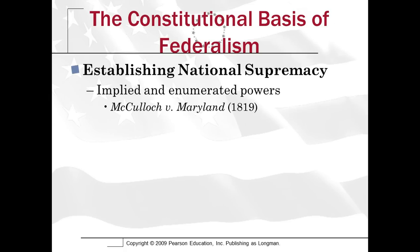The first one is McCulloch v. Maryland. This is an 1819 case. John Marshall is the Chief Justice. This is a case where Maryland is trying to tax the Bank of the United States — the federal bank. And the question is, can a state put a tax on the federal government?